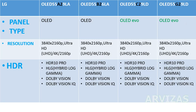Panel type: OLED A and B models use the standard OLED panel, while C and G models use the newer OLED Evo panel type. Resolution is 4K for all four televisions.